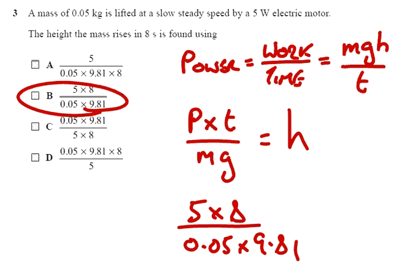A mass of 0.05 kg is lifted at a slow steady speed with a 5 watt electric motor. The height the mass rises in 8 seconds is found using power equals work over time.